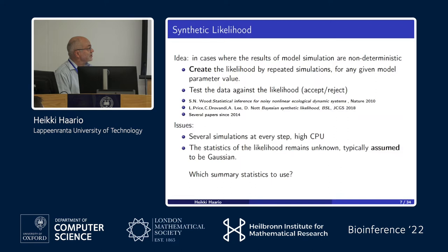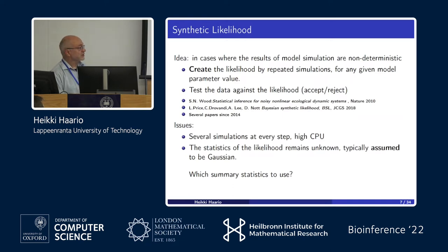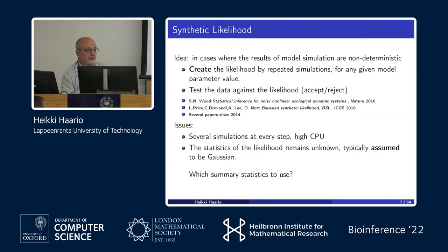There are some issues: at every proposed parameter we need several simulations, which makes this very CPU-expensive when the model itself is costly. Moreover, people typically assume the summary statistics are Gaussian, but that's not always the case. So another topic is: what summary statistics should be used?